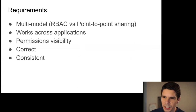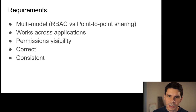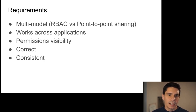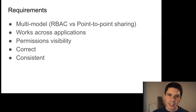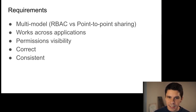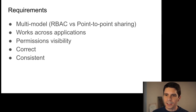Once you decide to make it a network service, you start collecting requirements. It should be multi-model — able to do RBAC just as easily as point-to-point sharing like in Google Docs, Twitter, or YouTube. You want it to work across multiple different applications, have visibility into who can do what on what resources, be correct — since any mistake is a security flaw — and be consistent. I'll talk about consistency quite a lot.